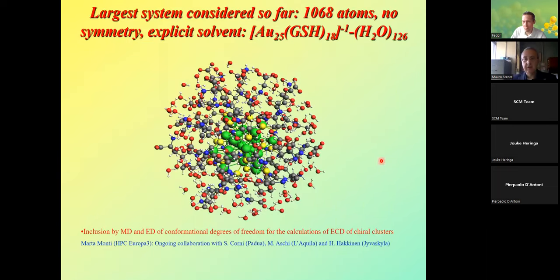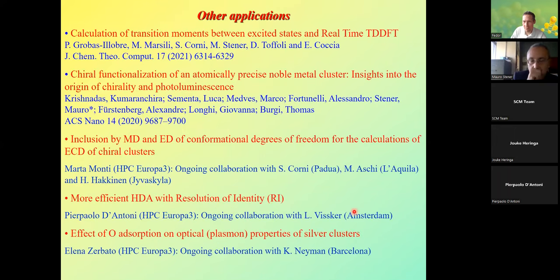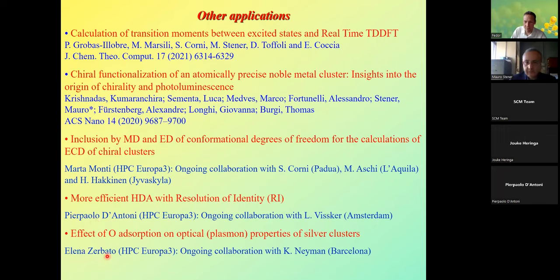For structures with different geometry, the plasmon can be very intense also in dichroism, and we rationalized this behavior with simple models of circulating currents. We are also working on a very large system with more than 1000 atoms in collaboration with Stefano Corni, Massimiliano Aschi, and Hannu Häkkinen. Other applications include: calculation of transition moments between excited states, chiral functionalization, inclusion of molecular dynamics and effective essential dynamics for conformational degrees of freedom and solvent effects.